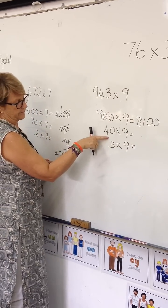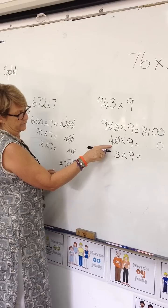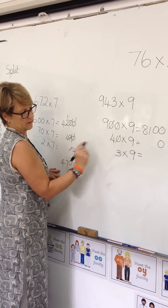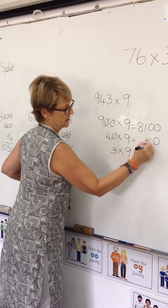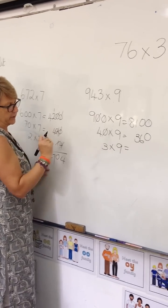What do I do? 4 times 9. Now what do I do? 4 times 9 is 36. So what is 40 times 9? 360. Now what do I do?